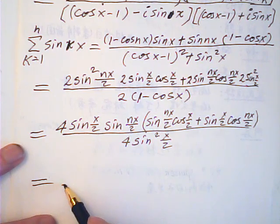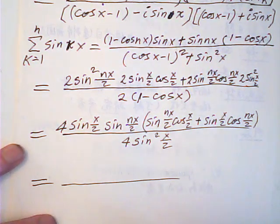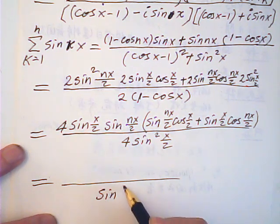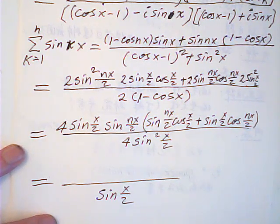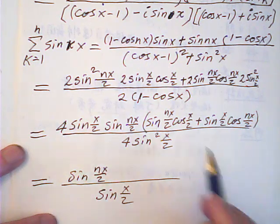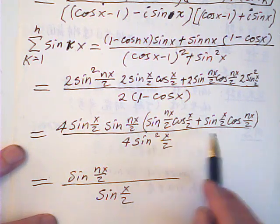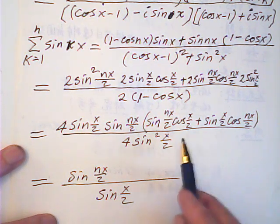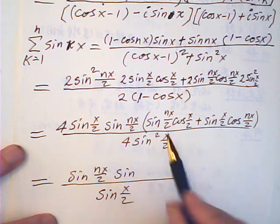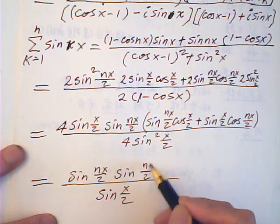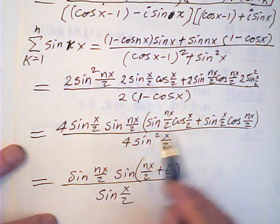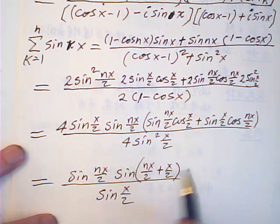Then the 4 cancels out, and sine cancels out. The leftover is sine(x/2) times sine(nx/2), and this is the sum of two angles for sine. So this is equal to sine(nx/2 + x/2) — if you look carefully, that's the sum-of-two-angles formula.